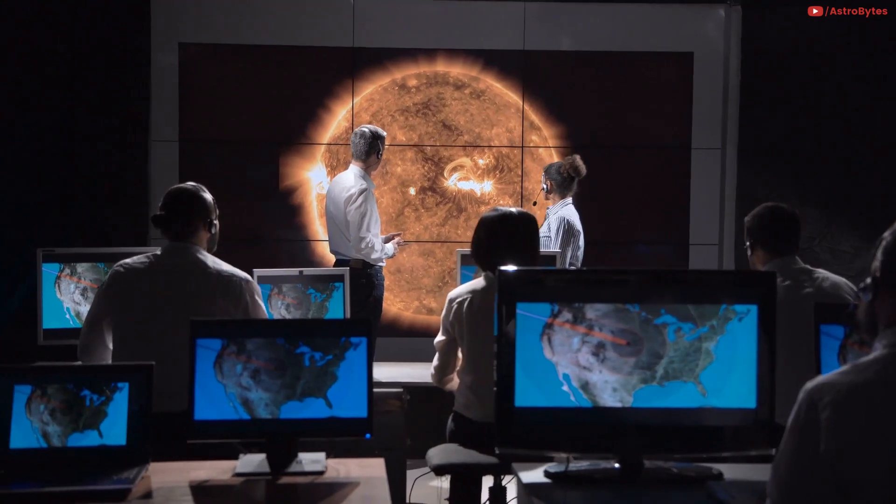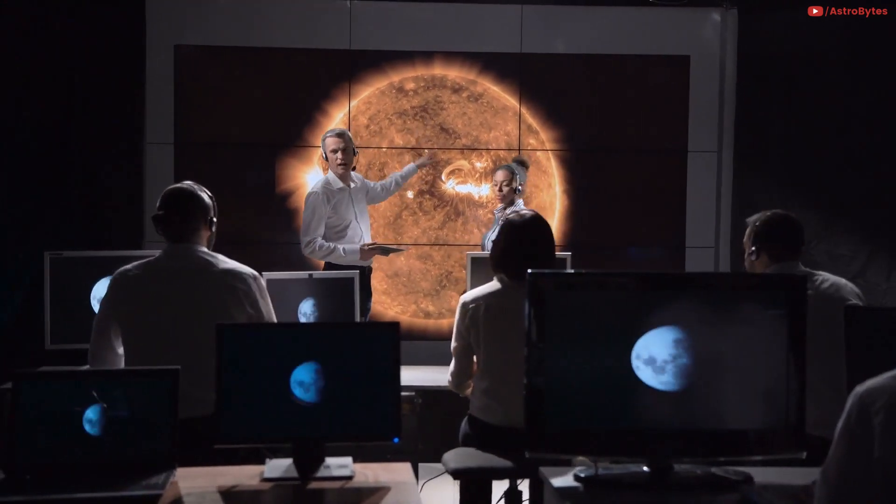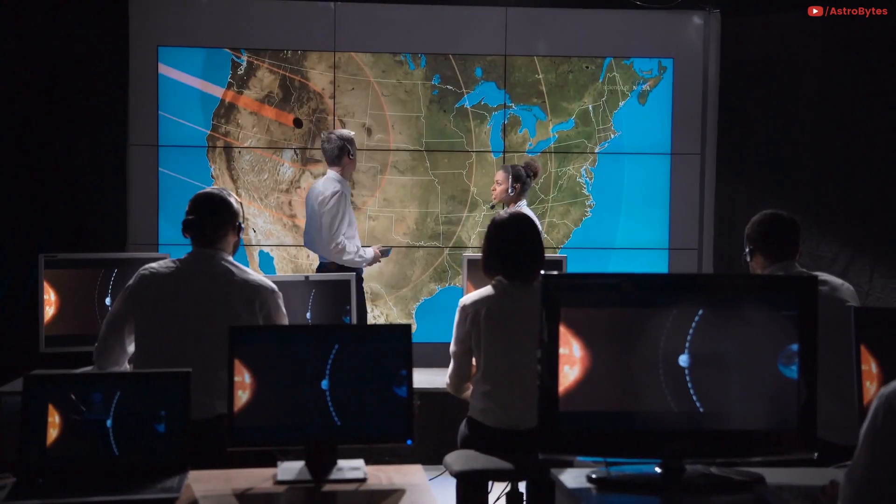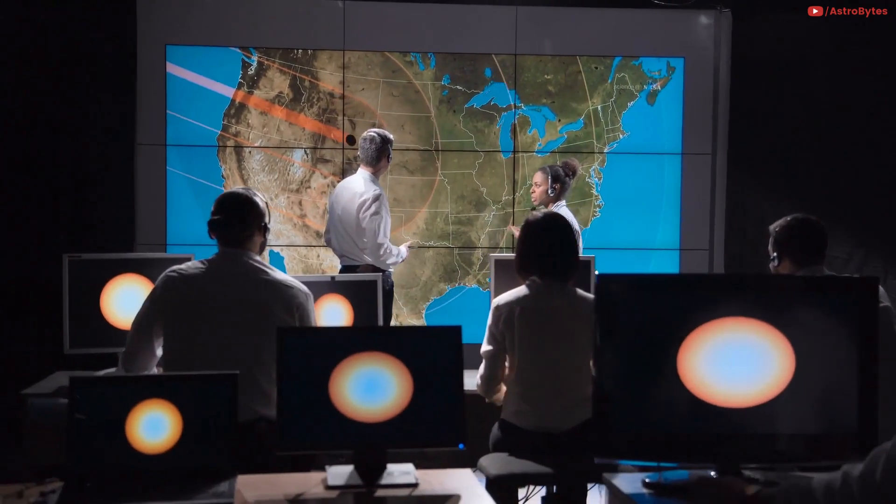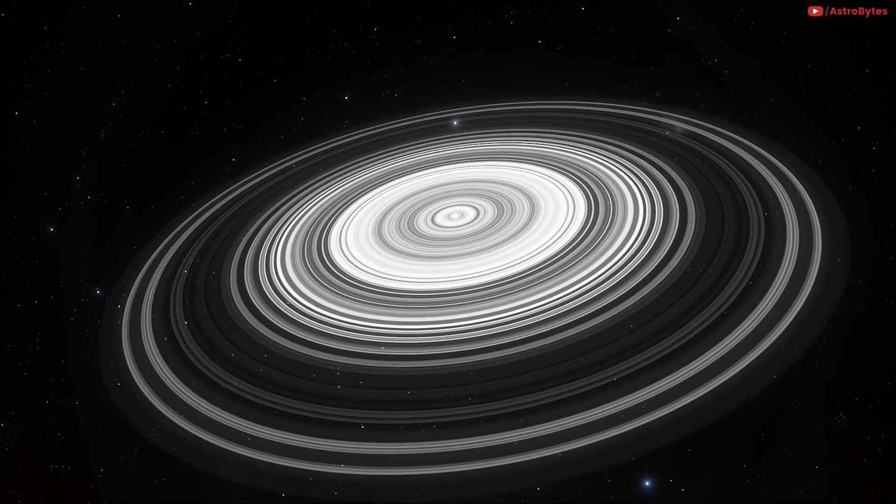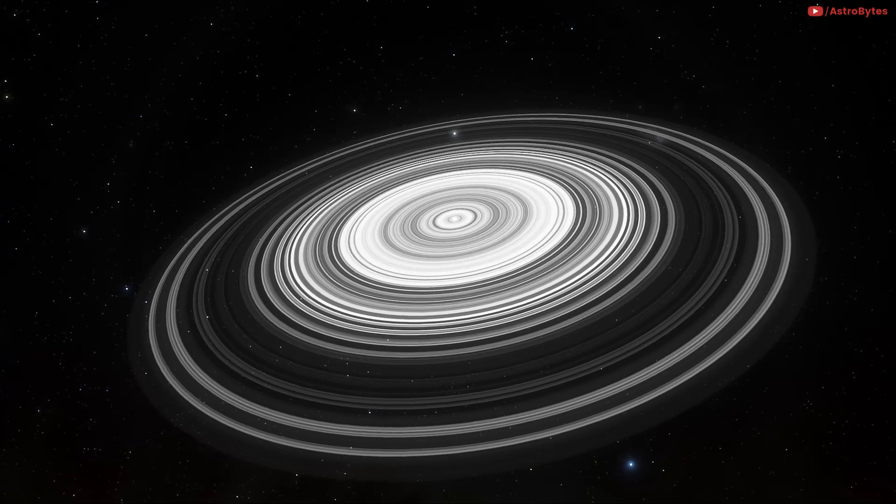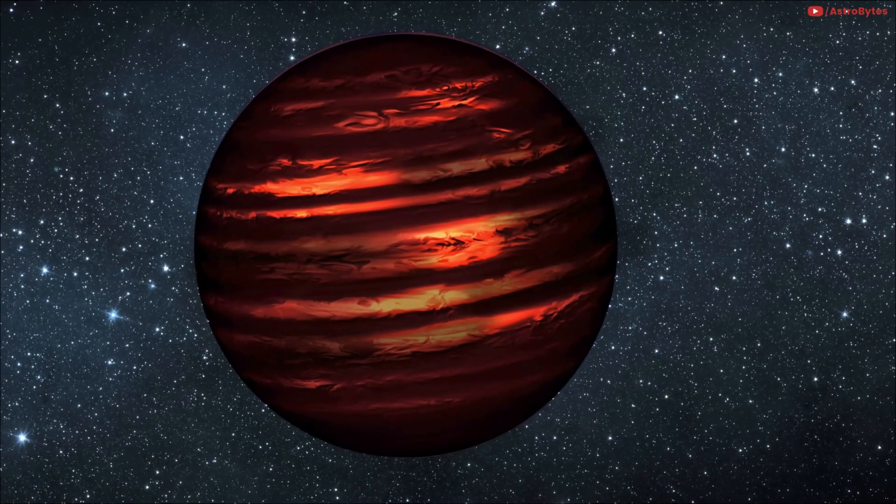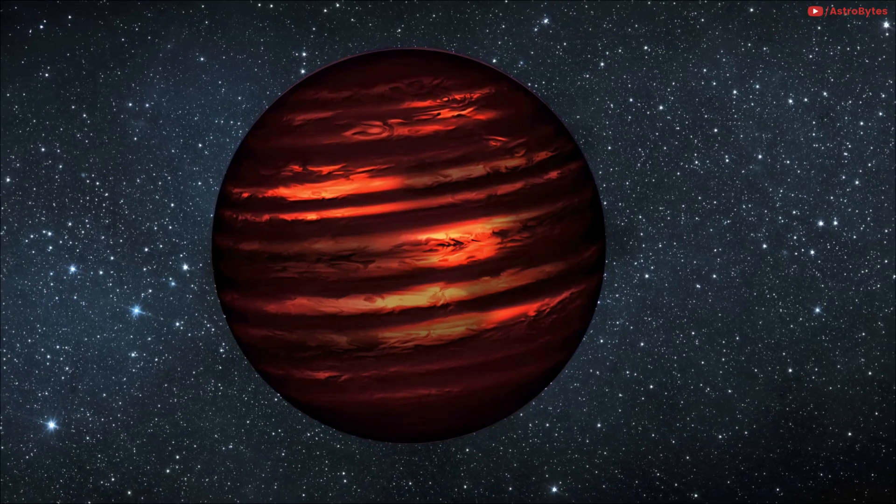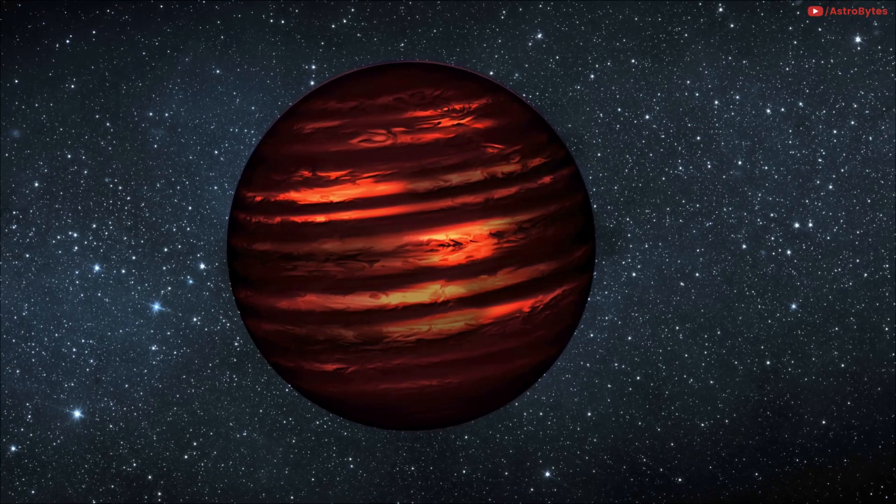Space scientists have declared J1407b as a planet, but it may be somewhere between a planet and a star. Considering its huge mass, this giant can be called as a brown dwarf. A brown dwarf is an object that has a size between a gas giant planet like Jupiter and a small star.